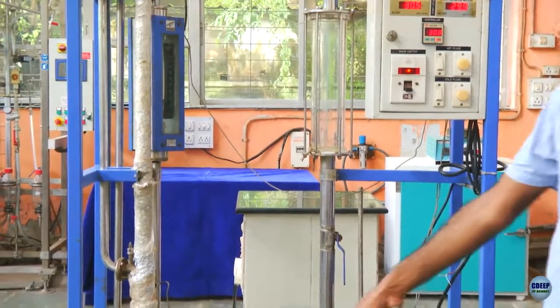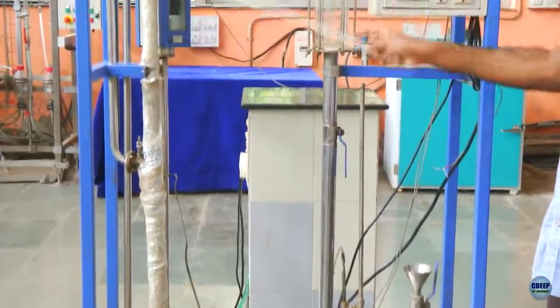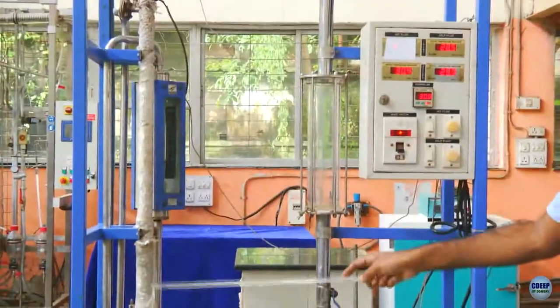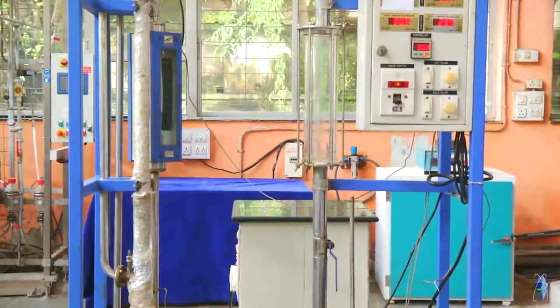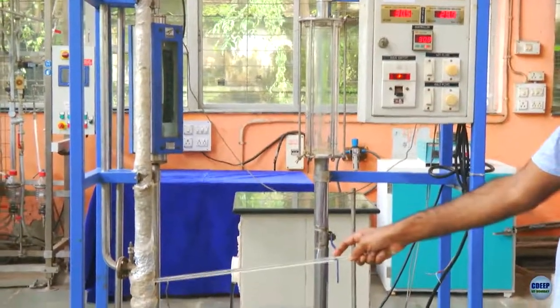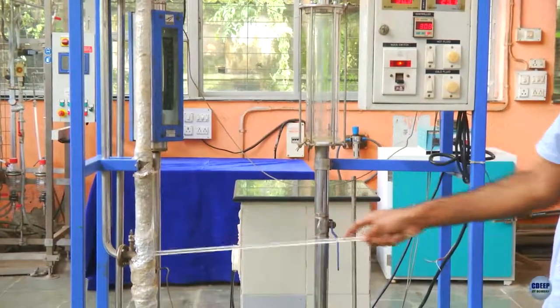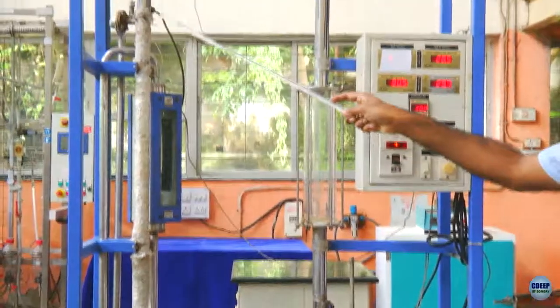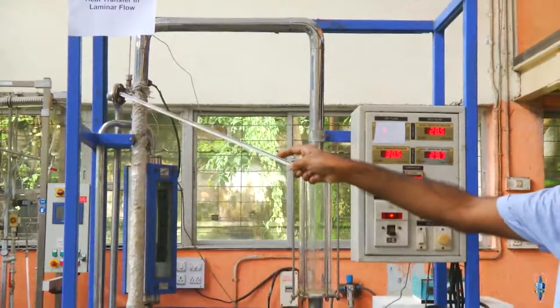The hot fluid is passed through the inner pipe and the cold fluid is passed through the outer pipe. On this side, we have the inlet of the hot fluid and the outlet of the cold fluid, while on the opposite side, we have the outlet of the hot fluid and the inlet of the cold fluid.